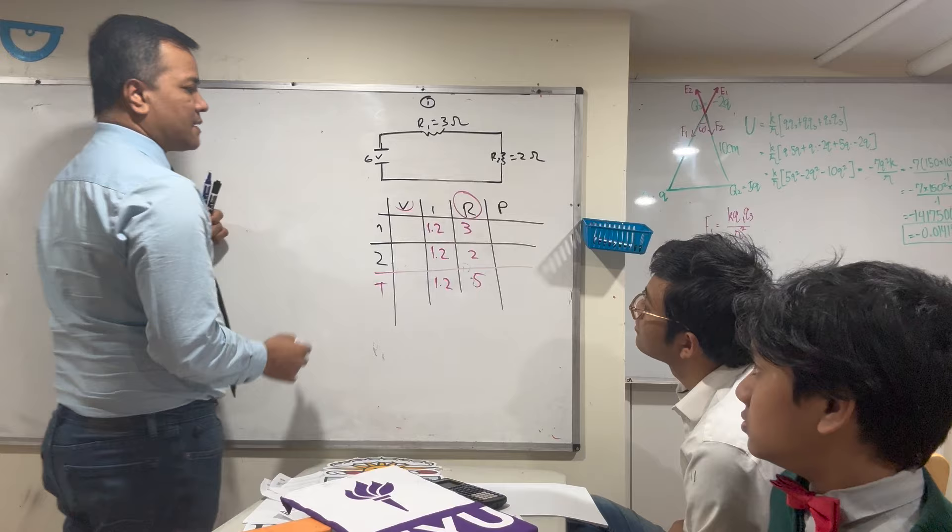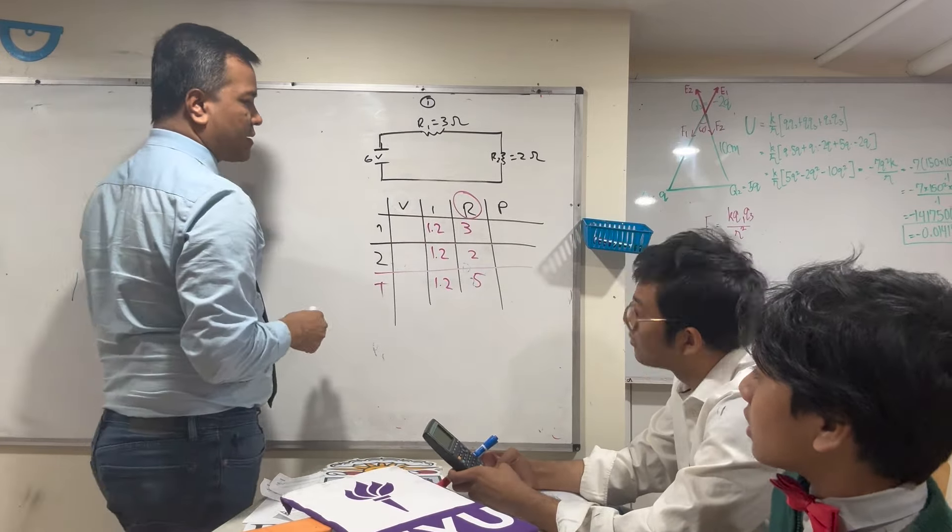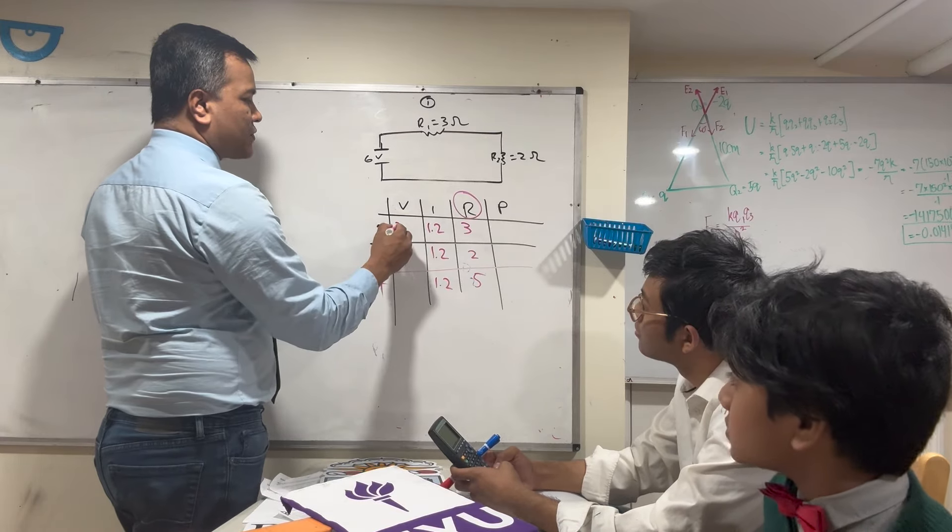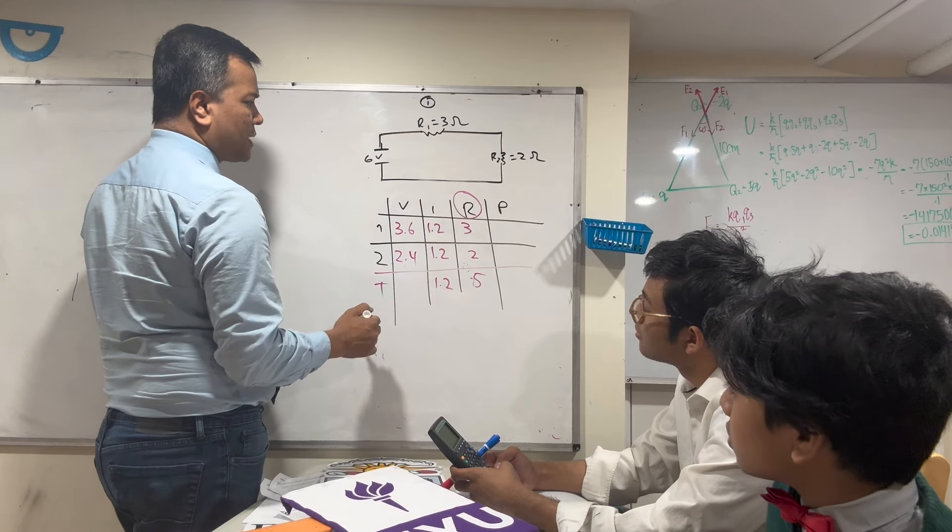Isaac, do V. V is going to be I times R, so it's gonna be 3.6, 2.4, 6. Well, the total has to be 6.